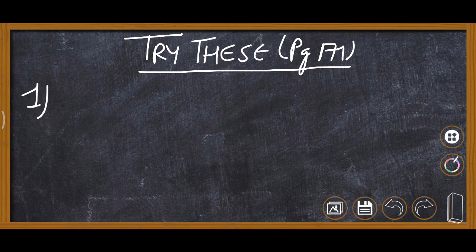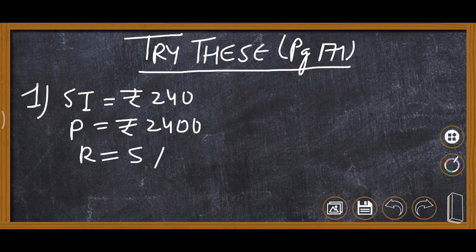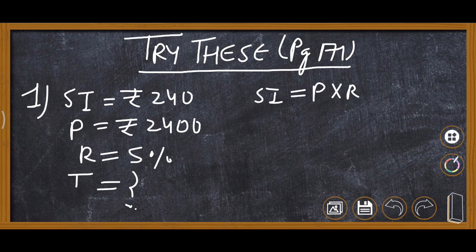Now doing Question 1 — Try These, page 171, Chapter 8, Class 7. You have ₹2400 in your account and the interest rate is 5%. After how many years will you earn ₹240 as interest? Simple interest is ₹240, principal is ₹2400, rate is 5%, and we are required to find time — so time will be the unknown (T = ?).